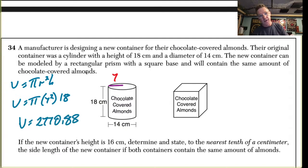That's 2770.88 whatever that was. So again, don't necessarily round it, but use the unrounded version maybe in your calculator because what I'm going to do now—I know this height is 16, this is a square.